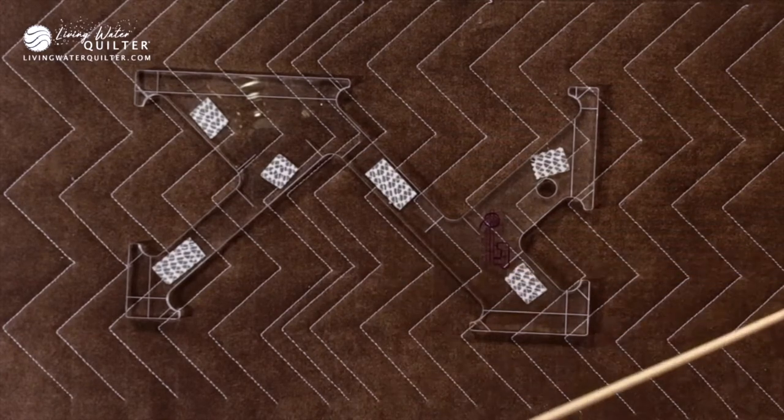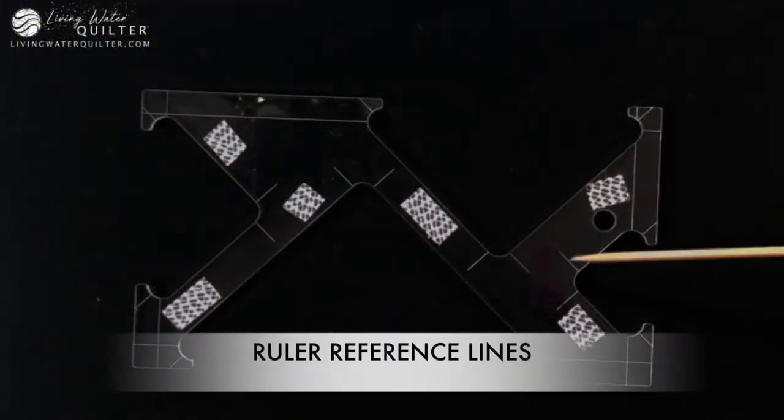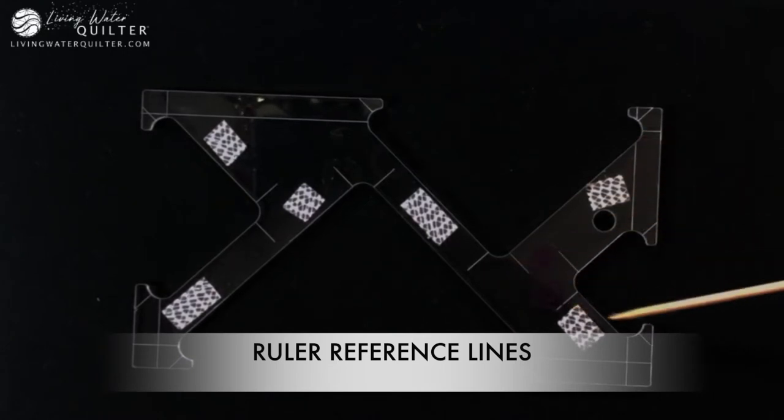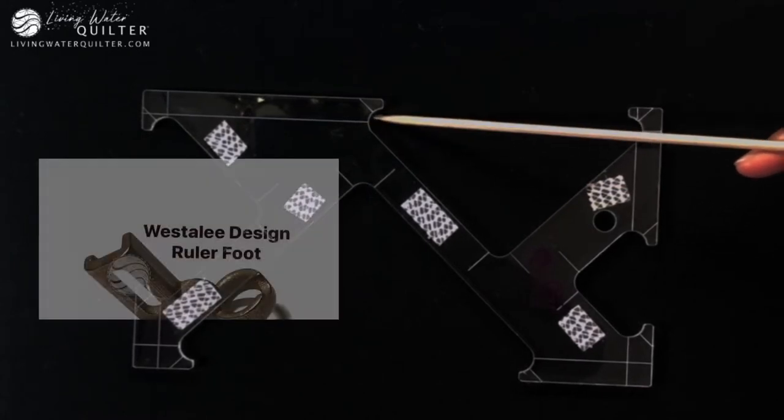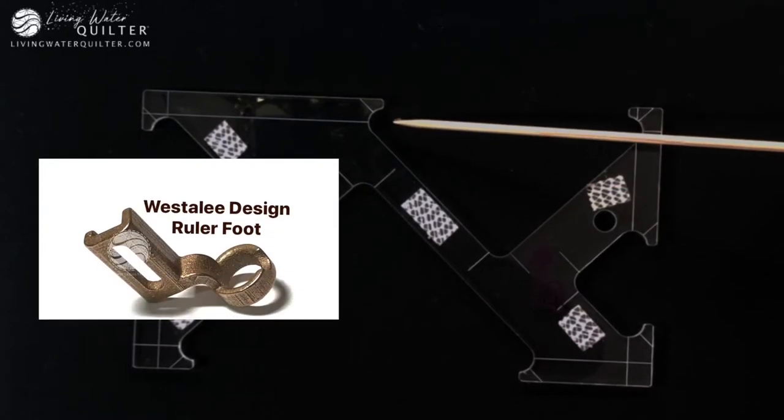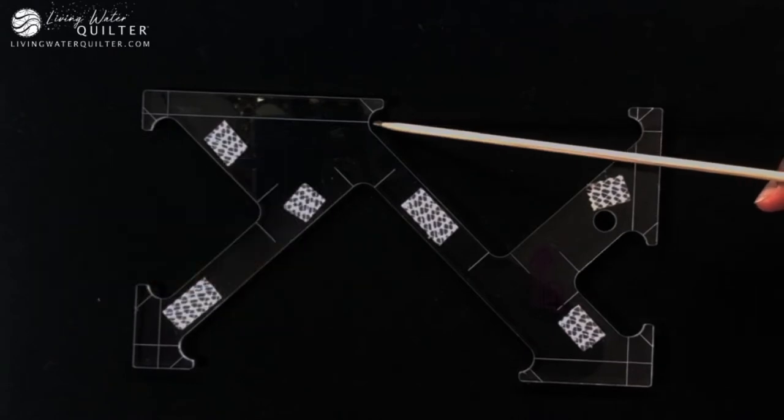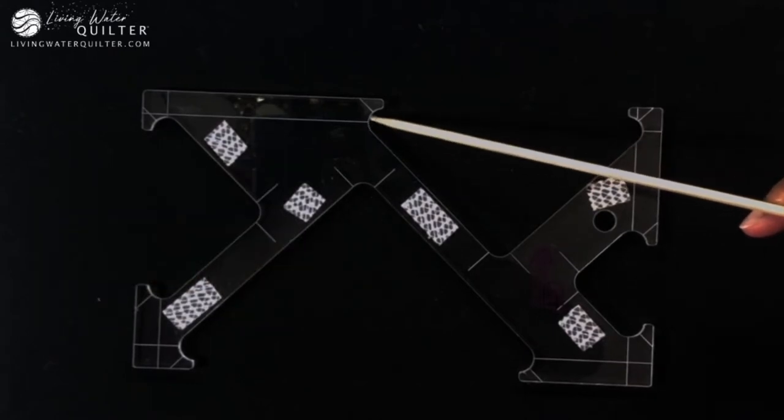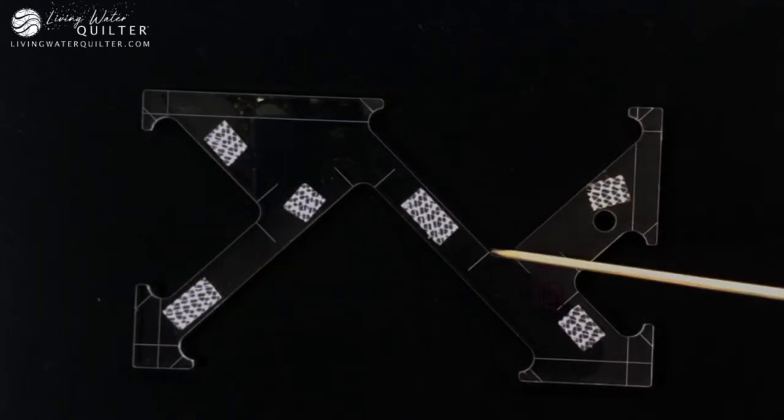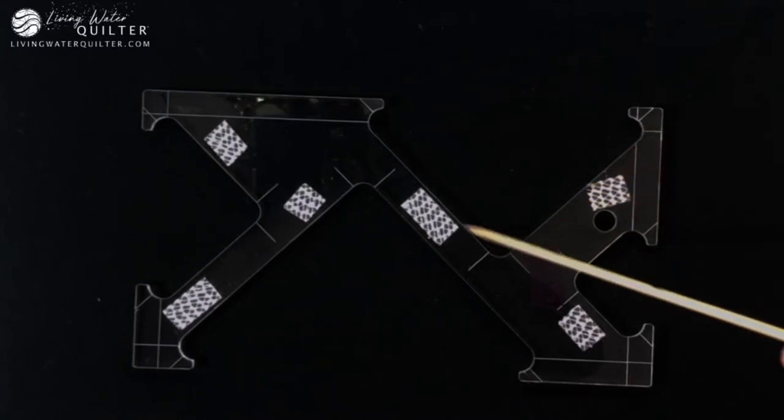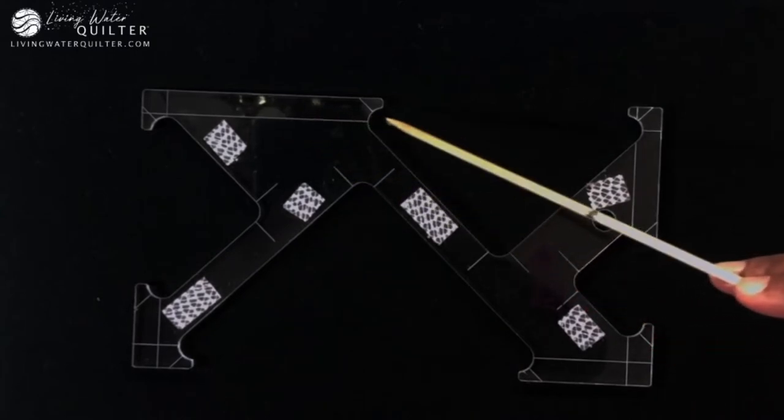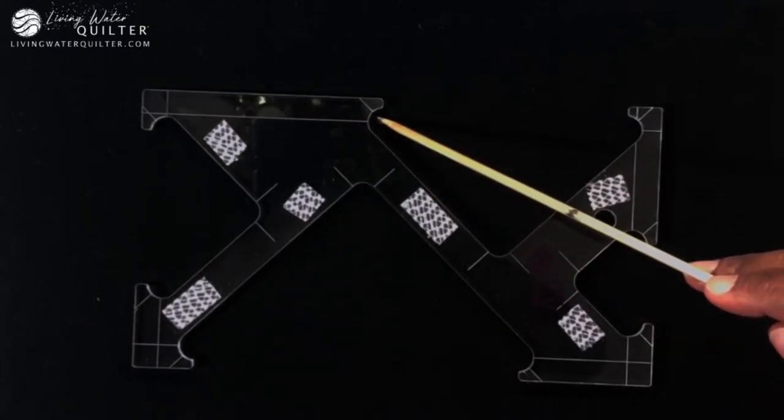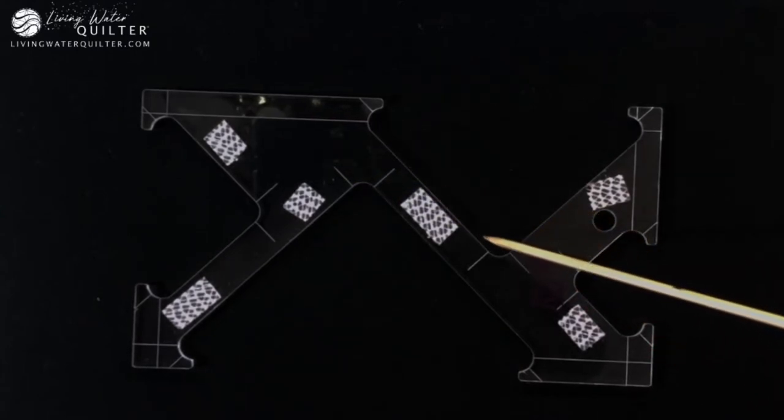Notice that there are some lines on the template. These lines indicate the needle position. When our ruler foot that's a half inch in diameter sits and rests against this template, it's always stitching a quarter inch away from the edge. It's nice to have these reference lines to indicate the needle position. That helps us to reposition the template to make the designs that we want.